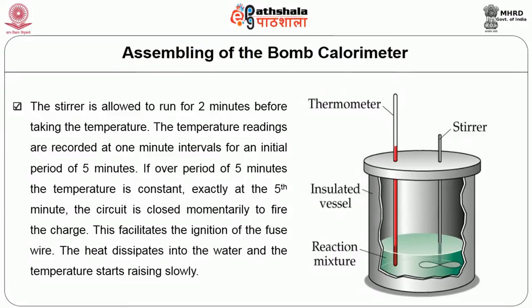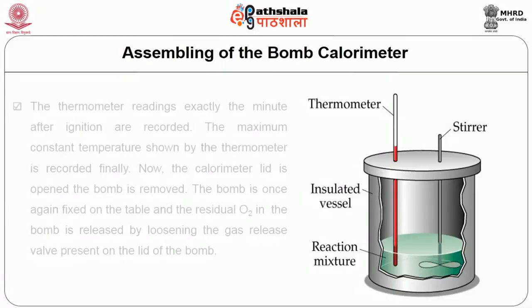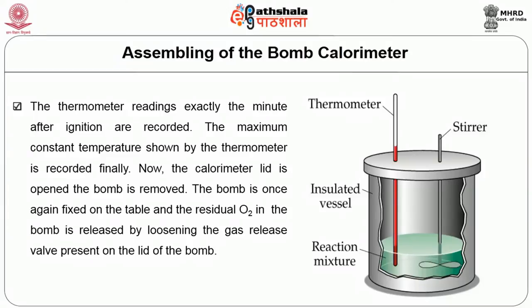Temperature readings are recorded at 1 minute intervals for an initial period of 5 minutes. If over this period the temperature is constant, exactly at the 5th minute the circuit is closed to fire the charge, facilitating ignition of the fuse wire. The heat dissipates into the water and the temperature starts rising slowly. Thermometer readings at each minute after ignition are recorded, and the maximum constant temperature shown is recorded finally. The calorimeter lid is then opened and the bomb is removed.